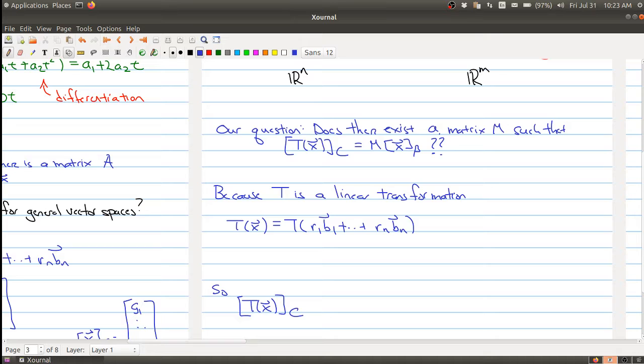And then by the properties of the linear transformation, this is the same thing as R1 times wherever the first basis element gets sent, all the way over to Rn times T(bn), where the last element gets sent to.